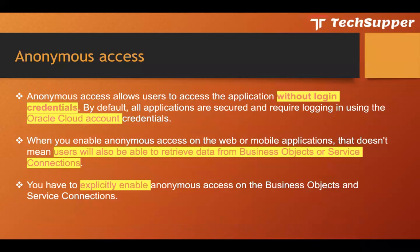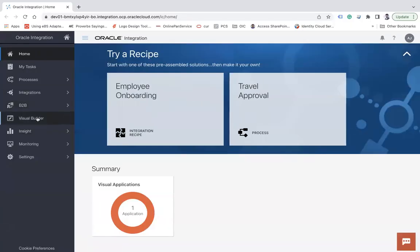Let's look at how to enable anonymous access step by step. First, I will show you how to enable anonymous access for the web or mobile application. Second, I will show you how to allow users to access data from business objects anonymously. Third, I will show you how to enable anonymous access on the service connection.